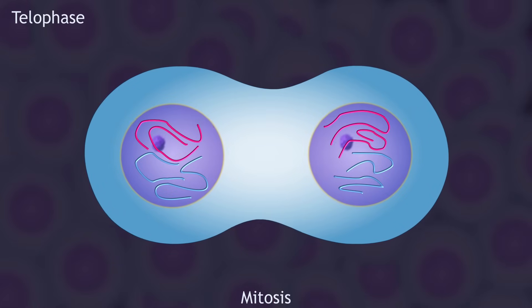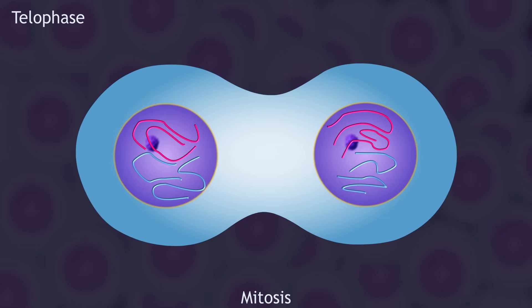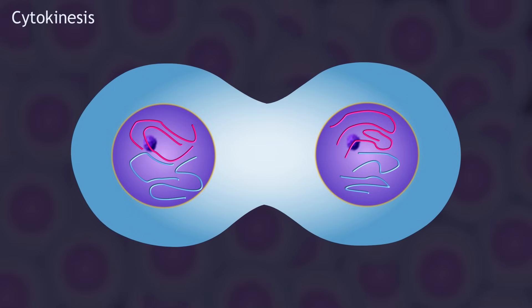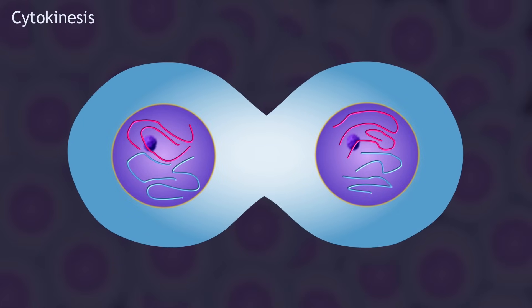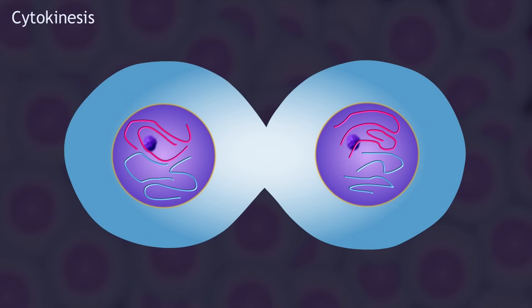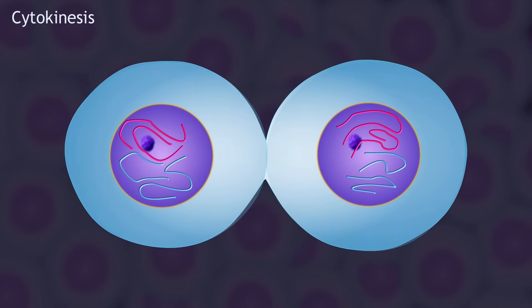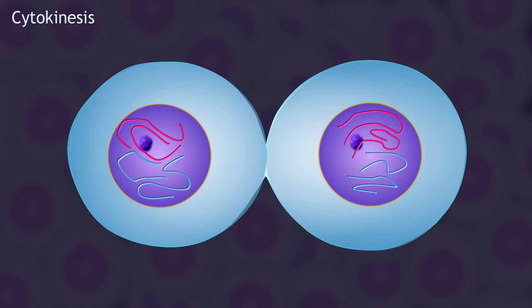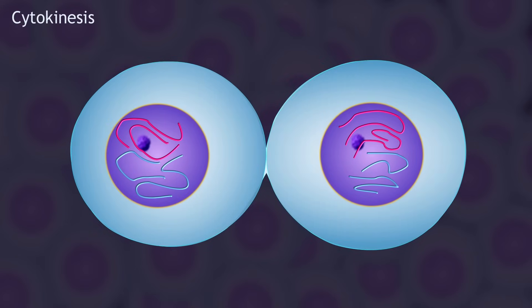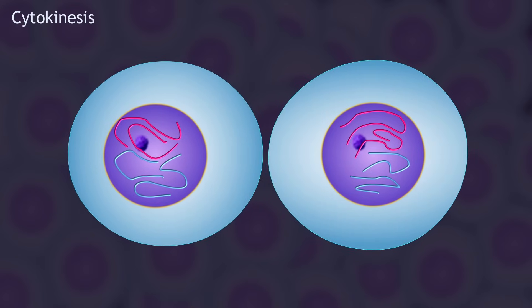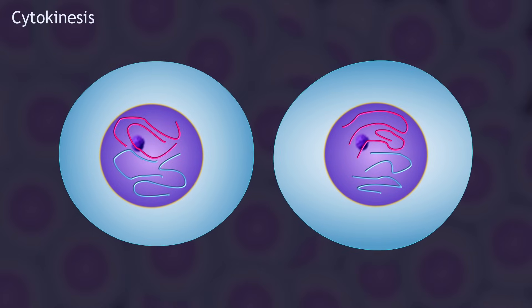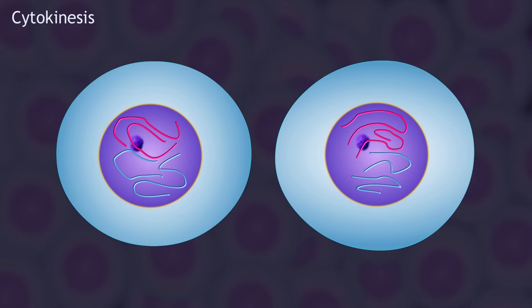Usually at the same time, the cell completely divides in half — a process called cytokinesis. The result is two genetically identical daughter cells. That is the entire cell cycle: interphase, mitosis, and cytokinesis.